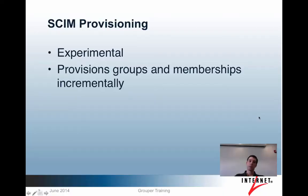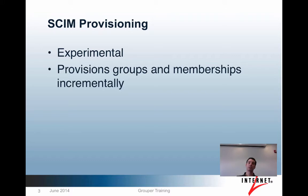Some of the other new features available in Grouper 2.2 include experimental support for SCIM provisioning. It provisions groups and memberships incrementally. There is currently no batch provisioning feature for SCIM, and it also has the requirement that all subject IDs on both ends match.